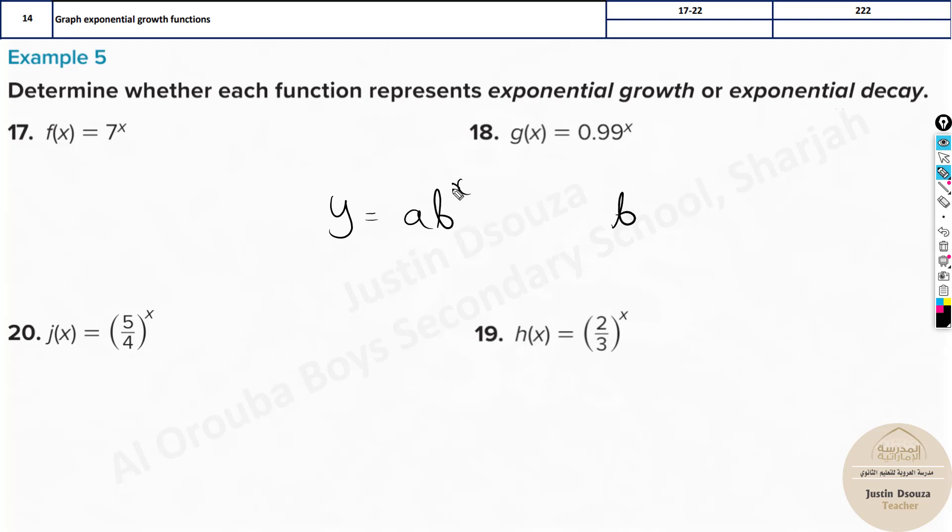The thing is if b, this value b which has the exponent x, if it is greater than 1, it's growth. But if b is less than 1 but greater than 0, it must be within this range, it can't be less than 0, then it is a decay function.